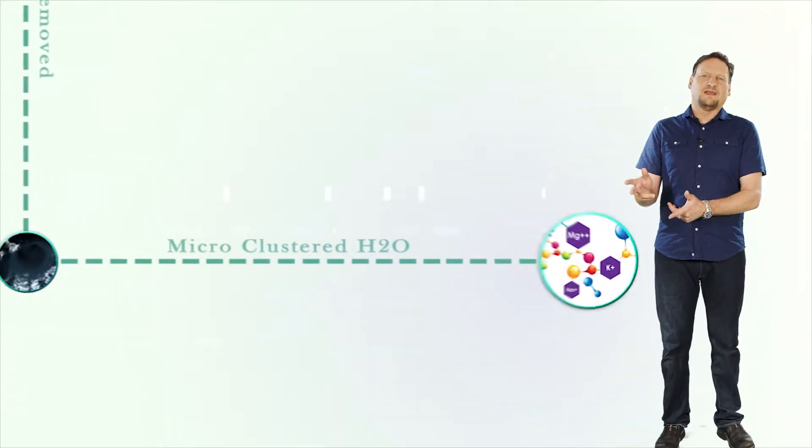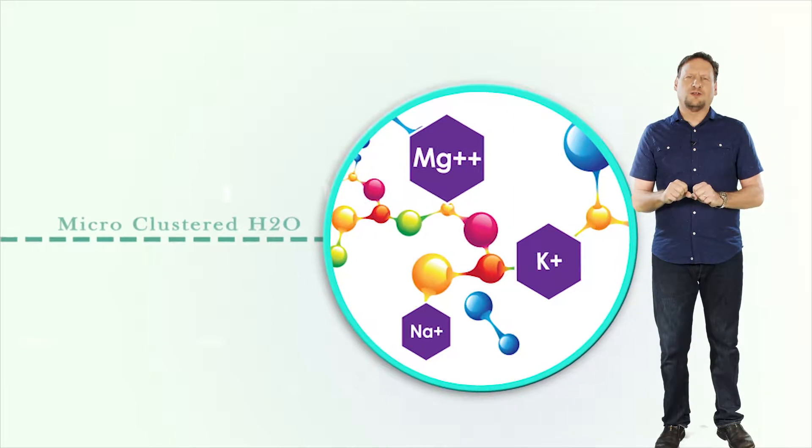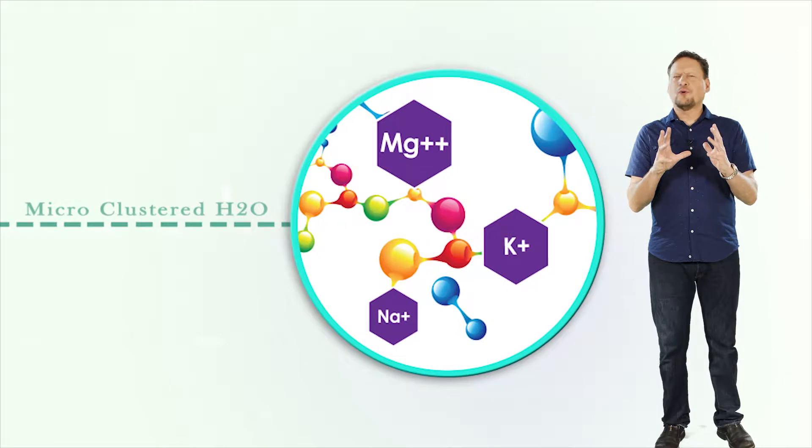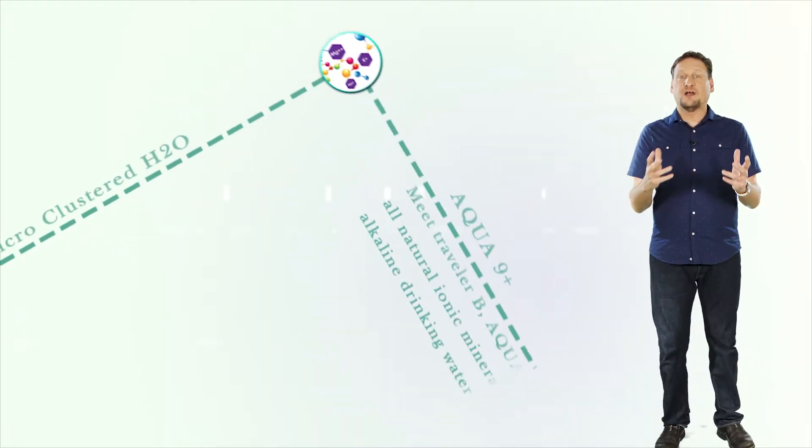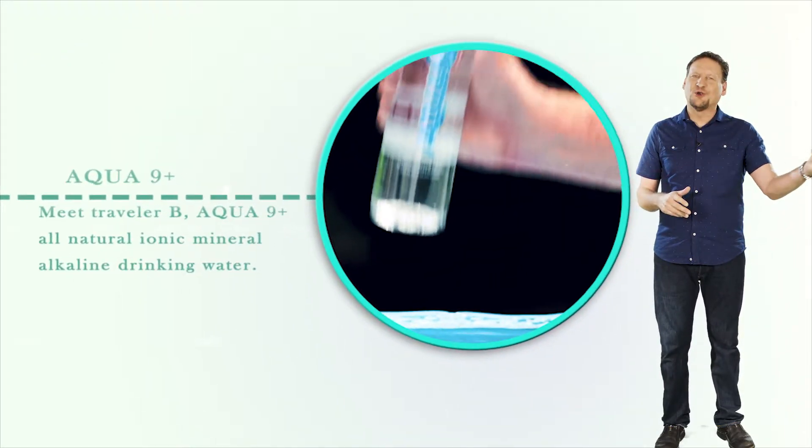Traveler B, on the other hand, is a very small, micro-clustered water molecule that is three times smaller than tap water, carrying compact, precious cargo called ionic minerals that can easily enter the cell walls for complete absorption and adequate hydration, completing the journey.